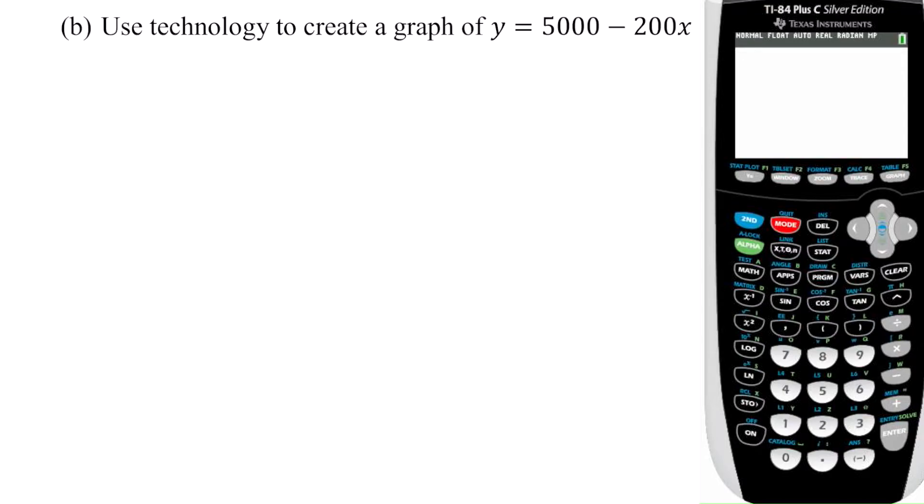Welcome. In this video, I'm going to show you how to use the TI graphing calculator to create a graph of any function, and we're going to use y equals 5,000 minus 200x. So the first thing you want to do is go into y equals and enter in your function. So go ahead and type in 5,000 minus 200, and then an x.